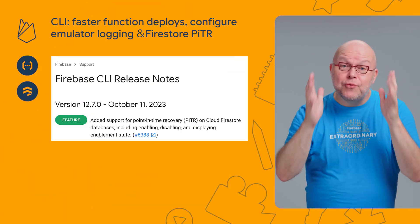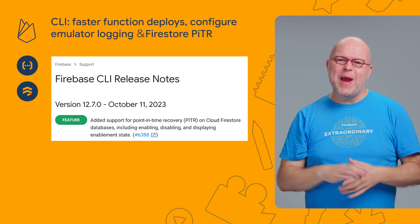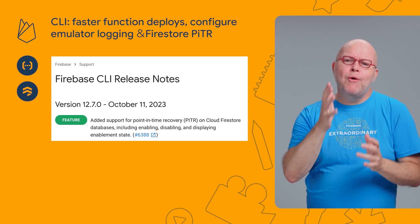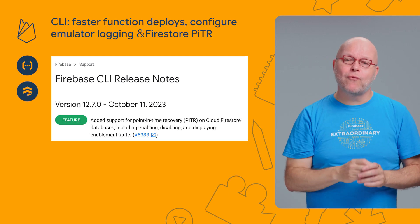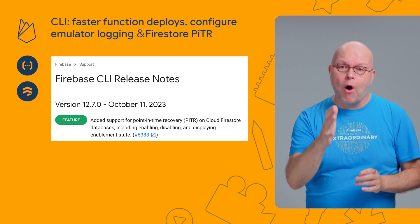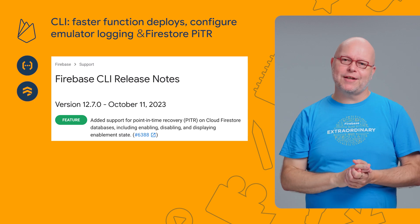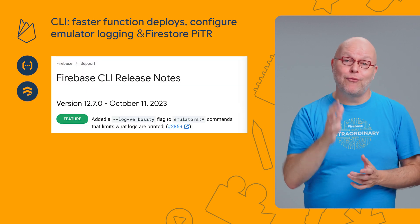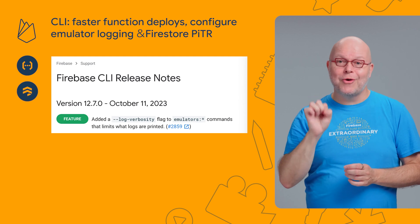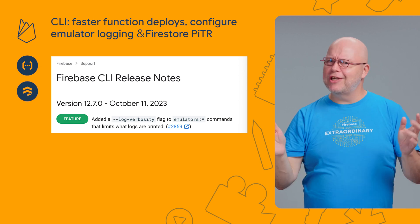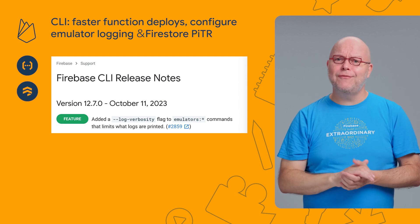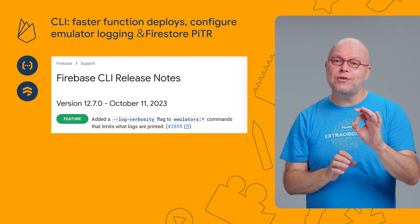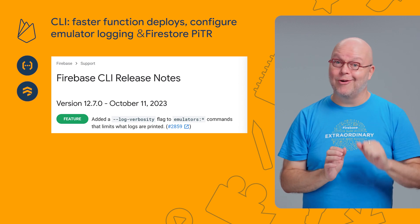In recent releases of the Firebase command line interface, we added a bunch of improvements. First up, you can now use our CLI to turn point-in-time recovery on or off on the Firestore databases in your project. You can also configure the logging level for emulators through the new --log-verbosity flag. This was a longstanding feature request, as reducing the emulator's logging should make it much easier to find your own logs in the output.